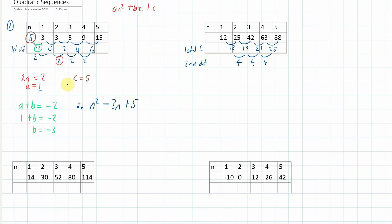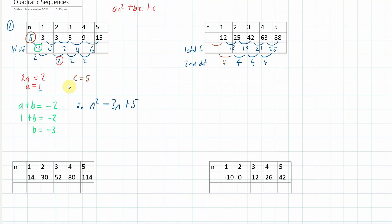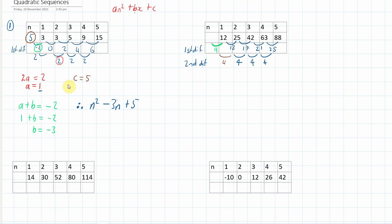Now, what we're going to do is extend backwards. The second difference is four each time, which means the first first difference is going to be 9 instead of 13. This means that the zero term must be 3, because 3 plus 9 is 12.